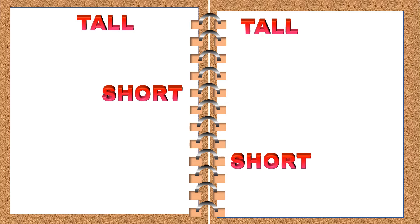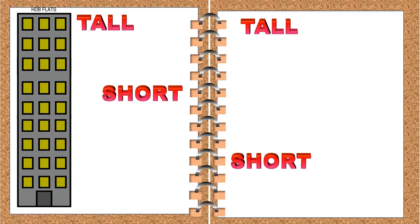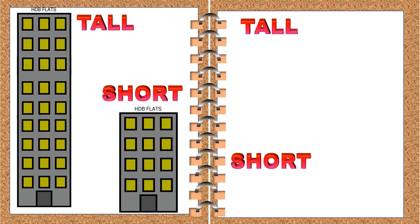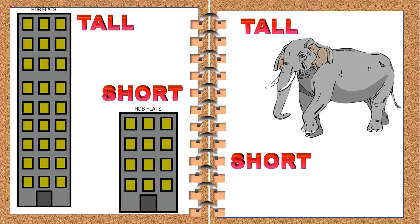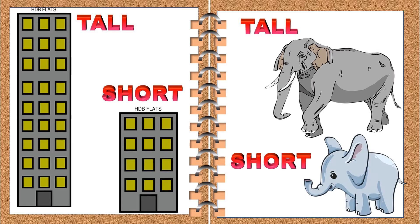Let's see some more examples. This building is tall in height. This building is short in height. This elephant is tall. This baby elephant is shorter than the mummy elephant. So whenever we say tall and short, we refer to the objects in terms of height.